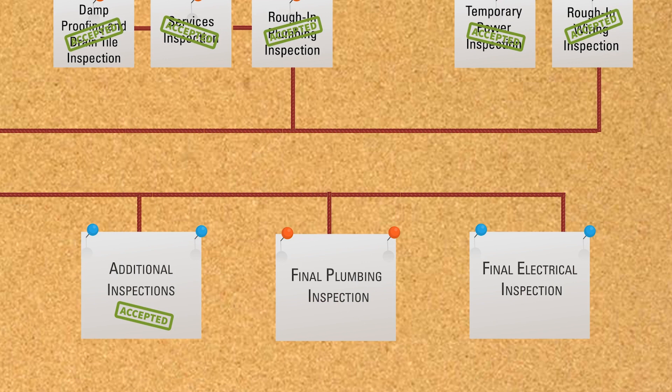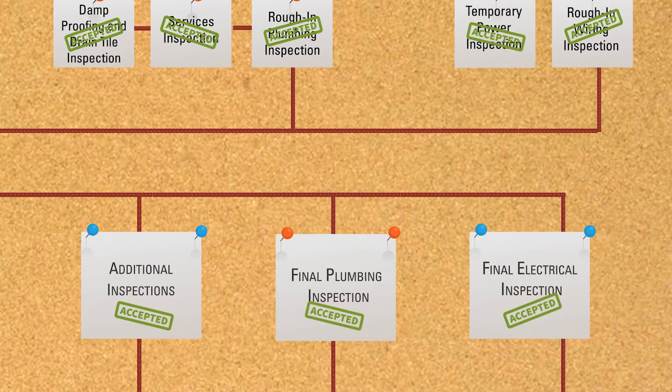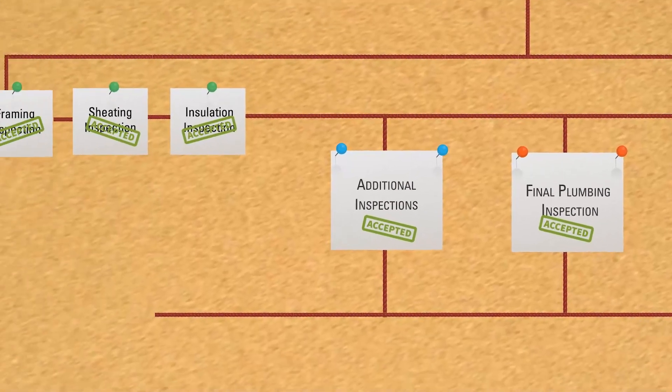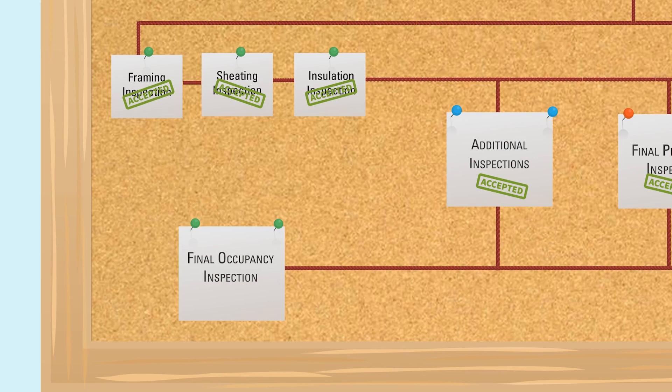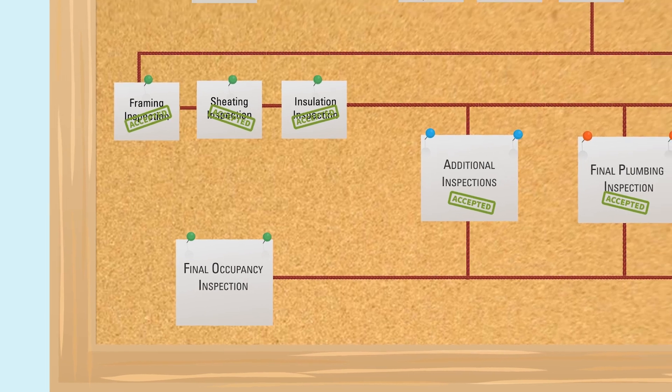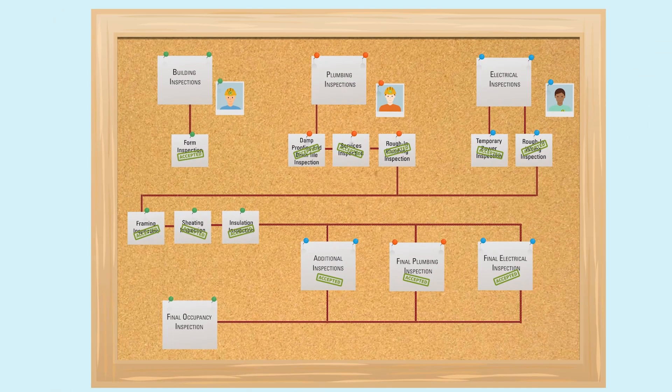Then, you're almost done! Once the inspector accepts the final electrical and plumbing, you can book your last building inspection, the final occupancy inspection. You can move into your new home only after the inspector grants a final acceptance.